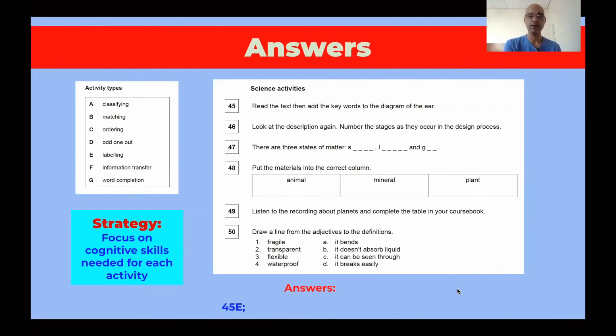Let's get to 46 now. Look at the description again. Number the stages as they occur in the design process. There is a process, there is a sequence, there is an order. So number 46, students are going to be ordering information. Pay attention to the keywords in the question. Look at it again. Number the stages as they occur in the design process. So that's the key here. That's the cognitive skill.